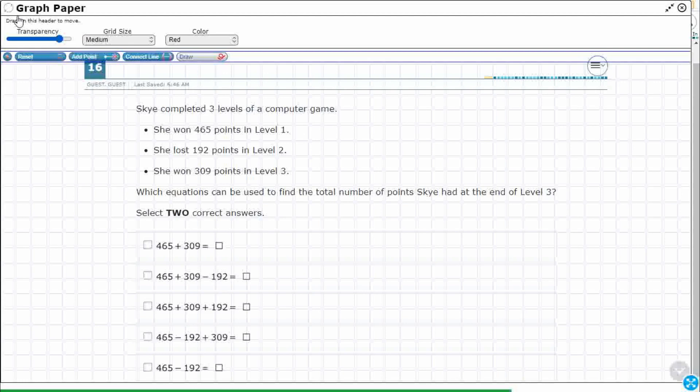Are these positive or minus? If we are going to win 465 points, when you're winning something, you're getting it, so that's going to be positive. When you're losing 192 points, you're going to have a negative. Then you're going to win 309 again.